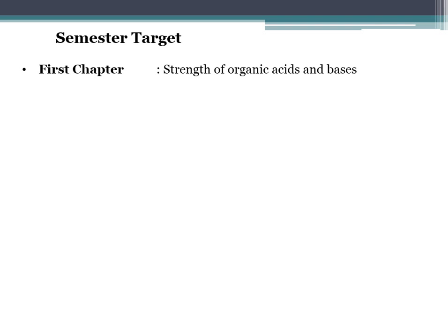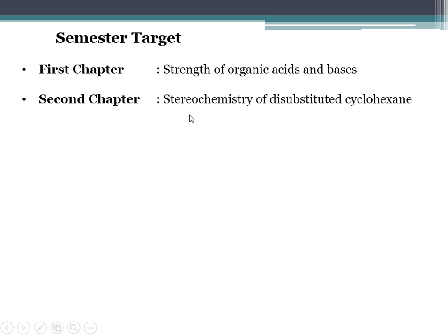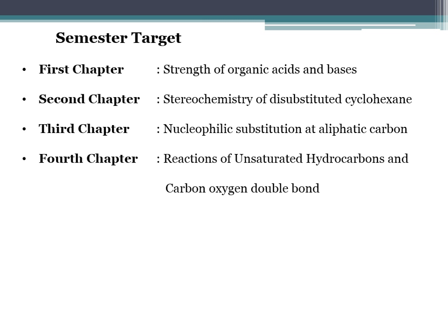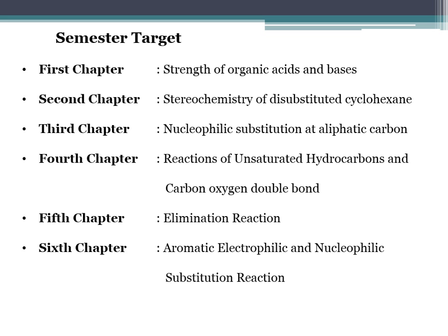In the first chapter we are going to study the strength of organic acids and bases. In the second chapter we will study the stereochemistry of disubstituted cyclohexane. In the third chapter, nucleophilic substitution at aliphatic carbon. In the fourth chapter, reactions of unsaturated hydrocarbons and carbon-oxygen double bond. In the fifth chapter we will study the elimination reactions, and in the sixth chapter we will study the aromatic electrophilic and nucleophilic substitution reaction.